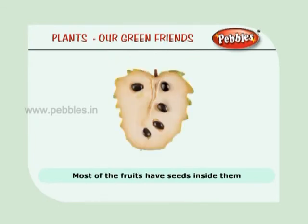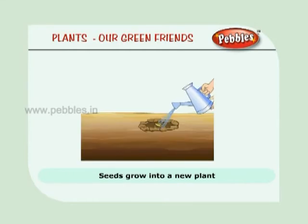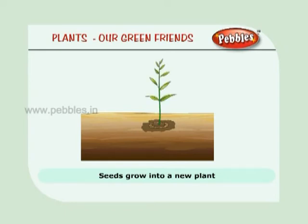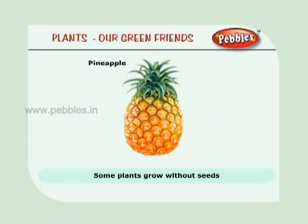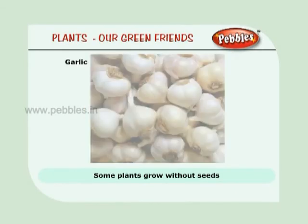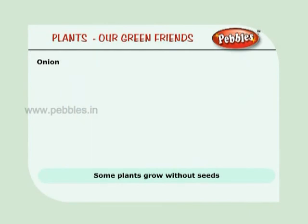Most fruits have seeds inside them. When the seeds are planted in the ground, they grow into a new plant — just like a new baby. The growing of a baby plant from a seed is called germination or sprouting. Some plants grow without seeds. They are pineapple, potato, garlic, onion, and sugarcane.